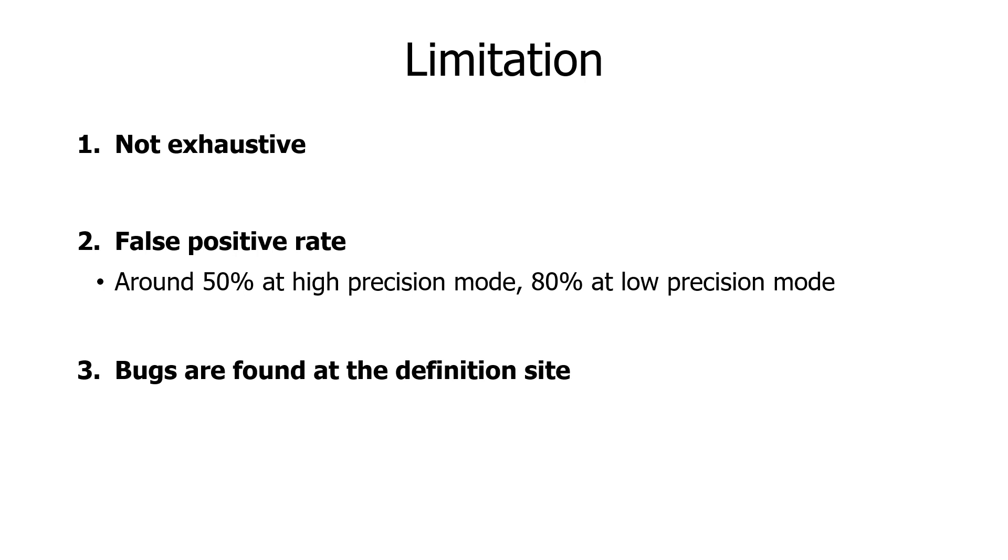Third, Rudra finds bugs at the definition site. This is both the strength and shortcoming of Rudra. This allows Rudra to proactively prevent bugs, but it does not give information about how many packages are affected or how likely the API is used in a vulnerable way. We believe that this is an interesting future research direction to assess the safety of the Rust ecosystem.